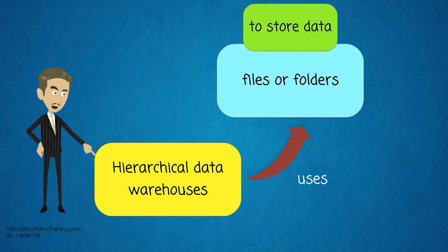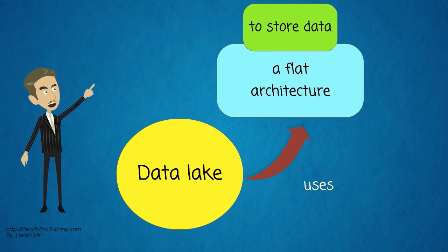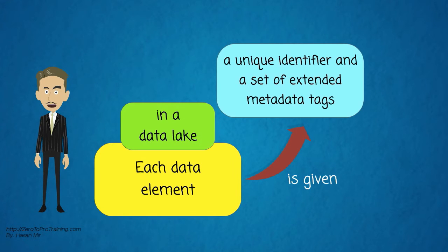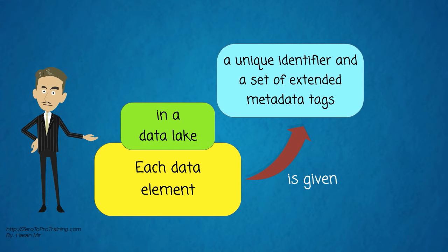Hierarchical data warehouses store data in files or folders. While a data lake uses a flat architecture for storing data. Each data element in a data lake is given a unique identifier and a set of extended metadata tags.